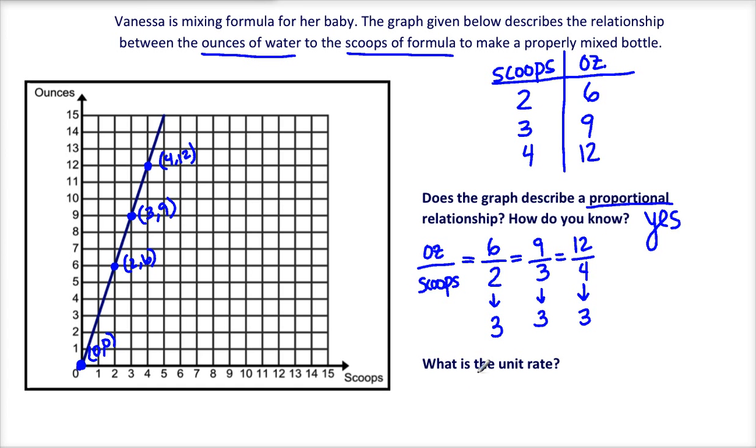The next question says: what's the unit rate? Remember, a unit rate means we want to know how many ounces per one scoop. I can use any one of these lines to help me figure it out. Let's use this one: 9 ounces combines with 3 scoops. How can I make 3 scoops into 1 scoop? I can divide by 3. Whatever I do on the bottom, I have to do on the top as well. So I divide by 3 on the top, and I get 3.